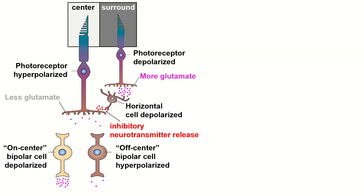The surround of the receptive field also influences the amount of glutamate released by the photoreceptors. If the surround is dark, the photoreceptors in the surround will depolarize, causing them to release more glutamate onto the horizontal cell they are connected to. This horizontal cell will depolarize in response and release its own inhibitory neurotransmitter, glycine. Glycine will further inhibit the center photoreceptor, causing it to release even less glutamate, creating the highest response in the on center ganglion cell since it prefers conditions of lower glutamate due to its metabotropic receptors.